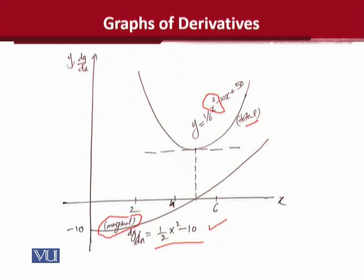To get a numerical value of the slope, we simply put in values of x — 0, 1, 2, 3, 4, 5, 6 — and plot the graph. This graph is a positively sloped graph overall, but it has a negative segment before a certain point and a positive segment after that point.